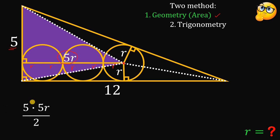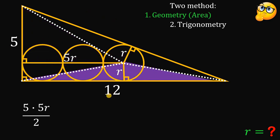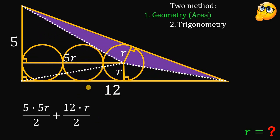The area of this triangle equals (5 × 5r) / 2, using the formula one-half base times height. For the triangle at the bottom, the base is 12 and the height is r, so that area equals 12r / 2. For the third triangle, we know the height is r but not the base yet.